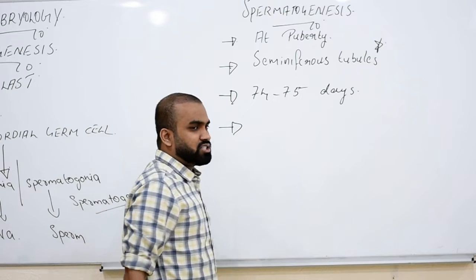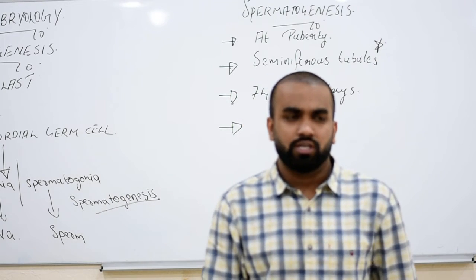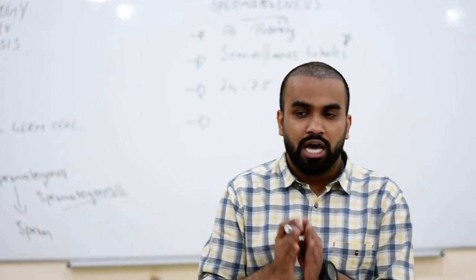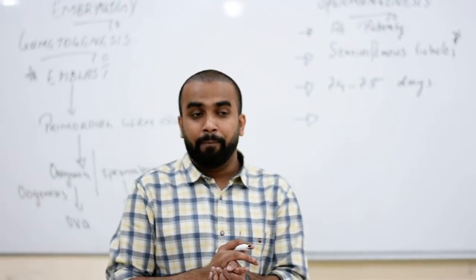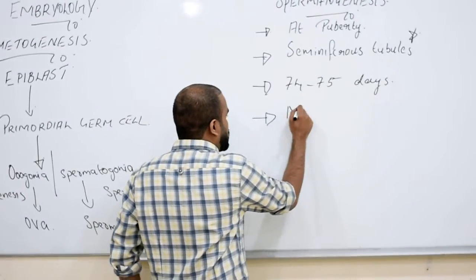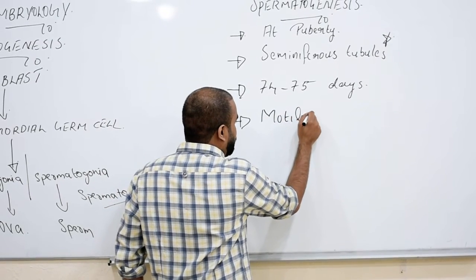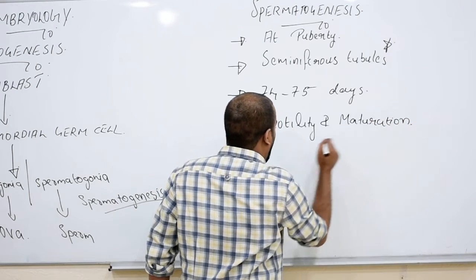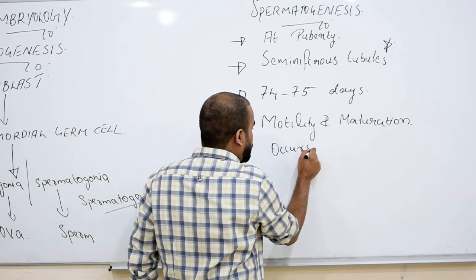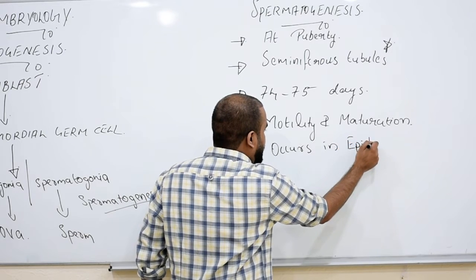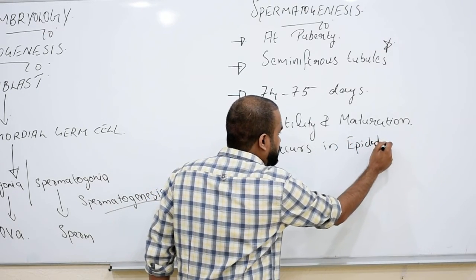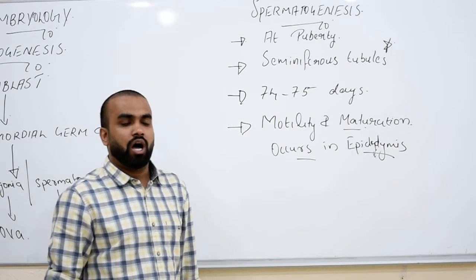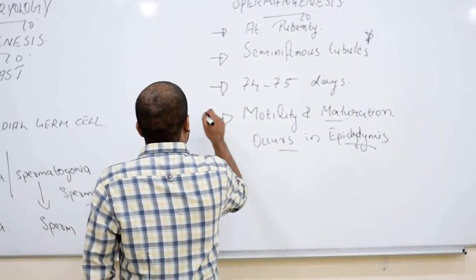Another recently and repeatedly asked question: in which part of the testis does maturation of sperm occur? Remember — motility and maturation of sperm occur in the epididymis. This is one of the important MCQ points: where does the sperm get mature? The answer is the epididymis.